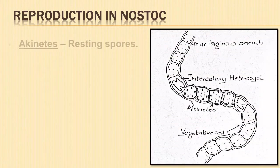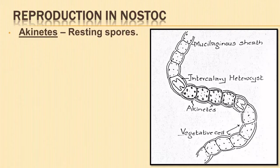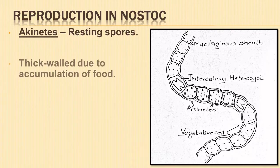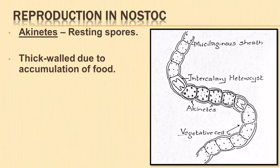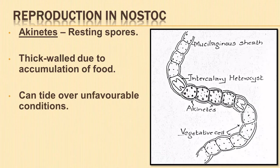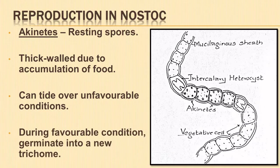Akinetes are known as resting spores. Cells become thick-walled due to accumulation of food and can tide over adverse unfavorable conditions. Akinetes have the ability to withstand desiccation for long periods of time. During favorable conditions, they germinate and give rise to a new trichome.